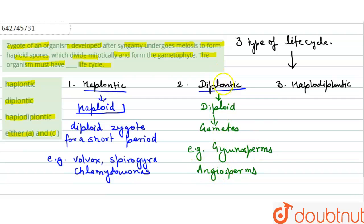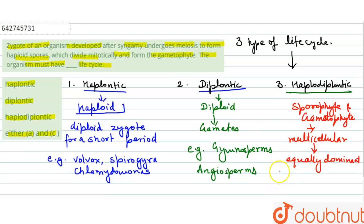Haplodiplontic is the third type of life cycle, in which both sporophyte and gametophyte are multicellular and both are equally dominant throughout the life cycle. Examples of haplodiplontic are bryophytes and pteridophytes.